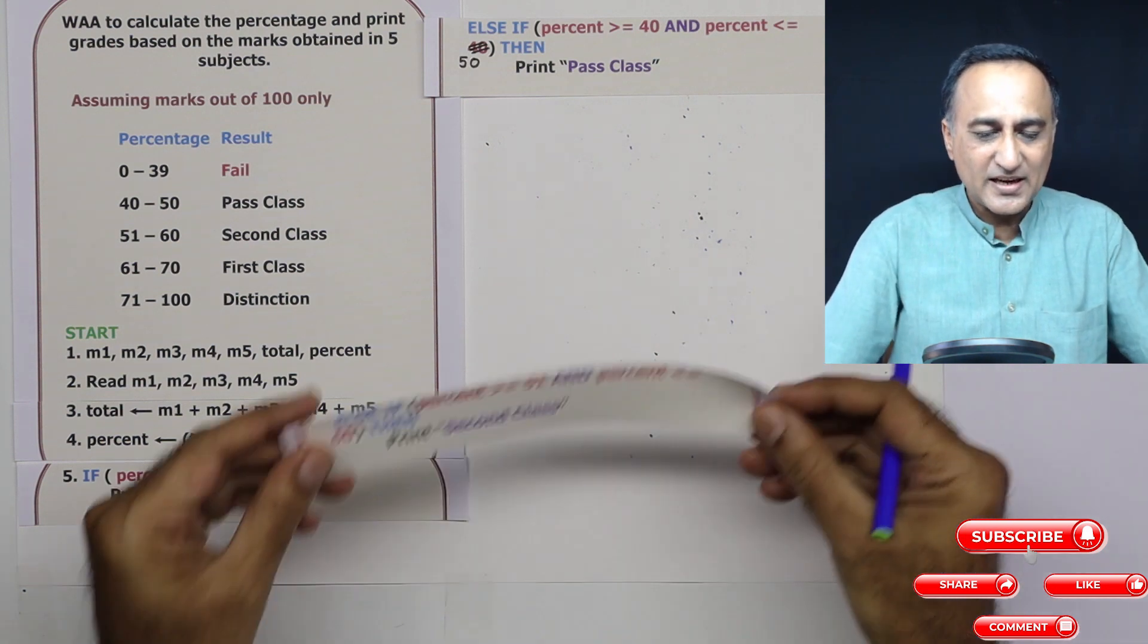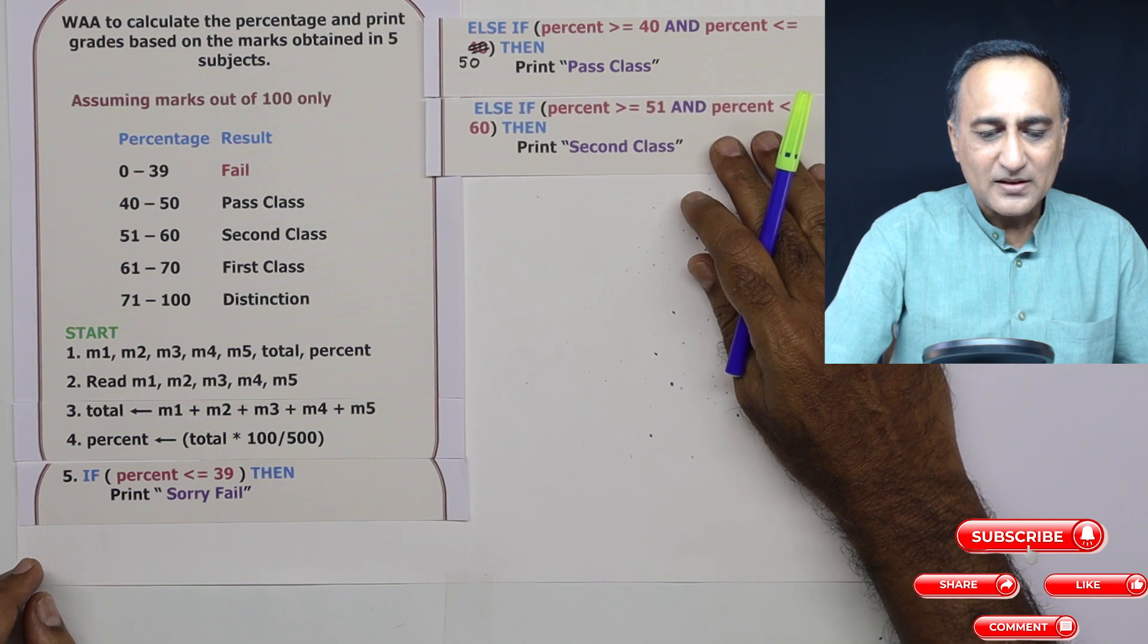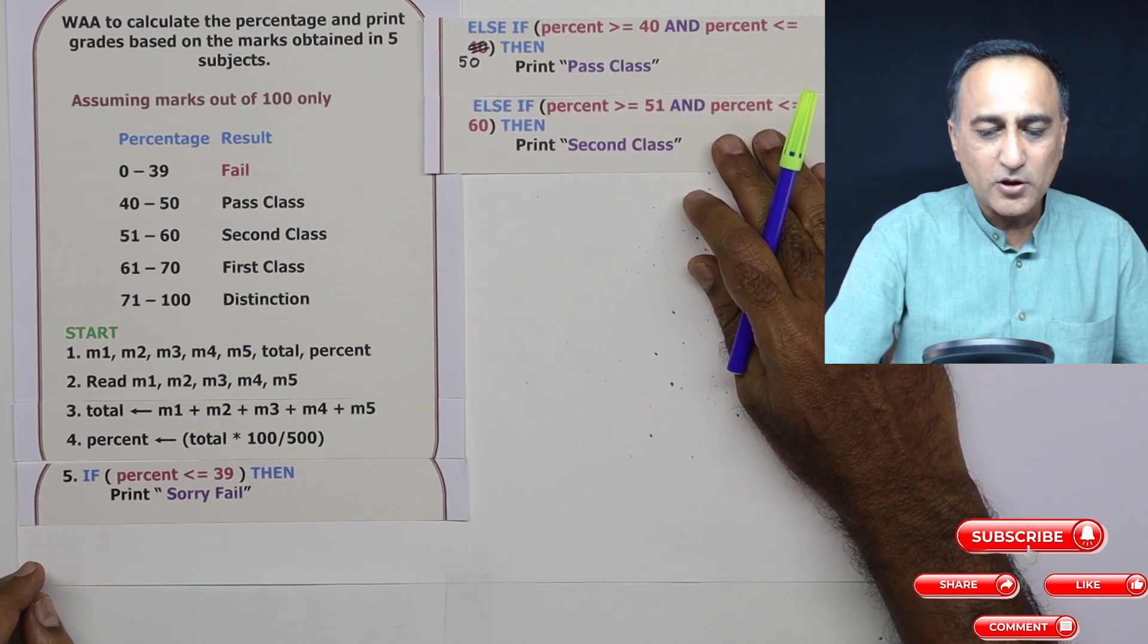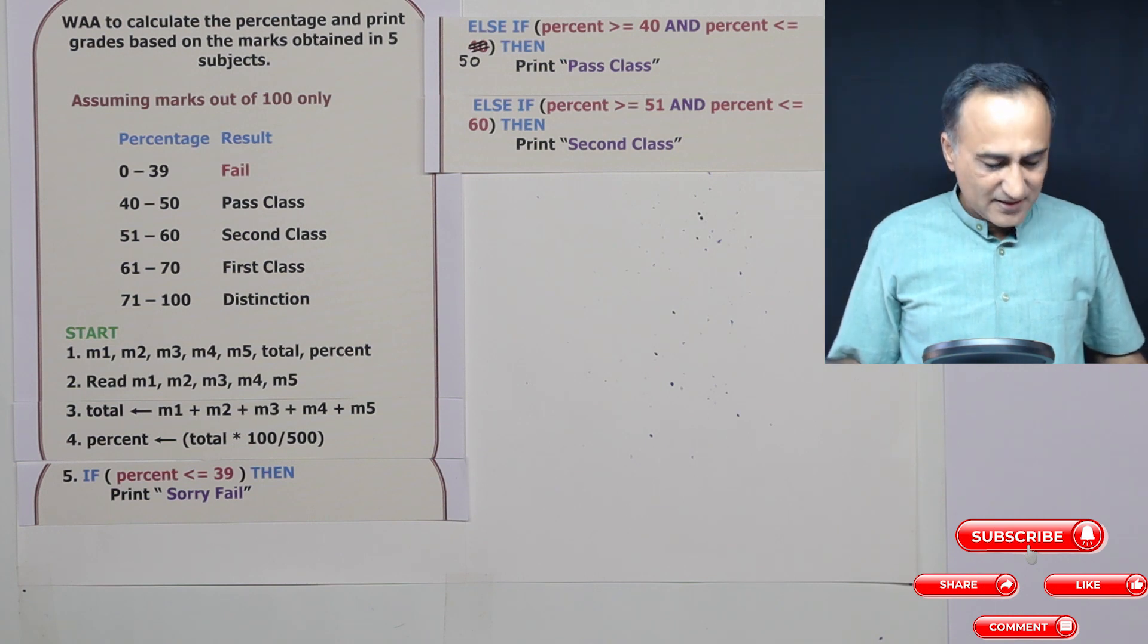Then 51 to 60. Then again, I will have to use an else if. Else if the percent is greater than or equal to 51 and less than or equal to 60, then print second class.